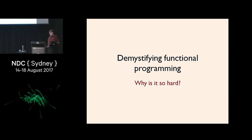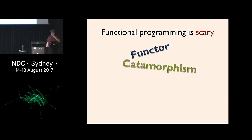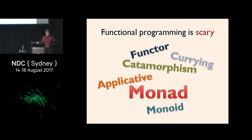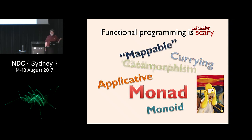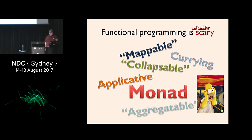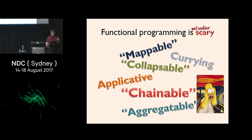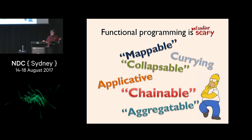A lot of people think functional programming is really hard — scary because of big words like functor, catamorphism, monoid, and monad. Those do sound scary, and the problem is that mathematicians got there first. But these words are actually just unfamiliar — once you know what they are, they're not that bad. And if they had different names like 'mappable' instead of functor, or 'collapsible' or 'chainable,' you still wouldn't know what they were, but they wouldn't sound so intimidating. You just have to get over the mathematical jargon — the concepts are actually pretty straightforward.